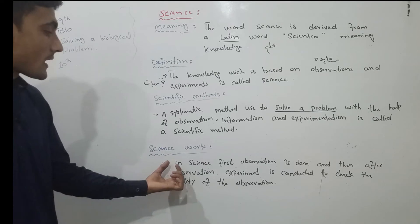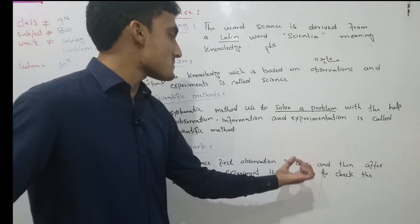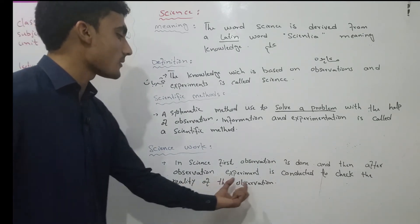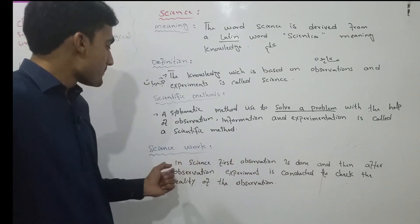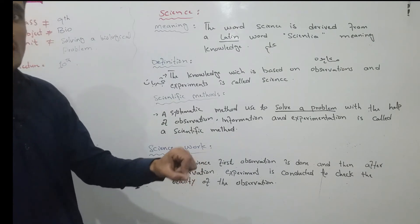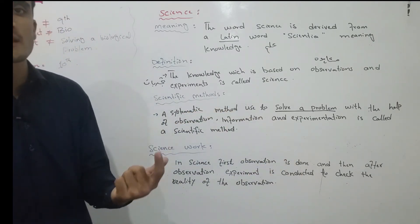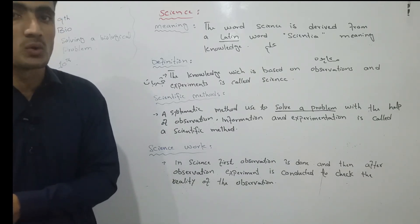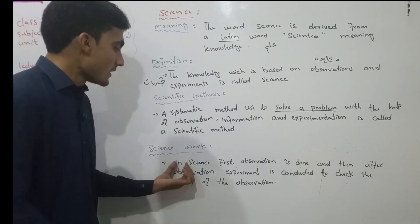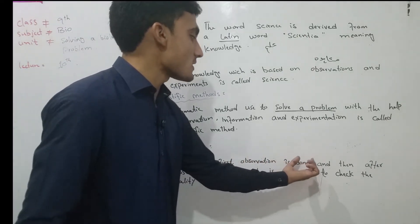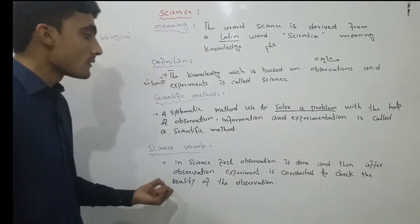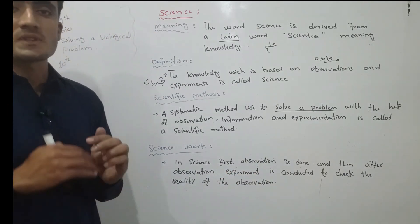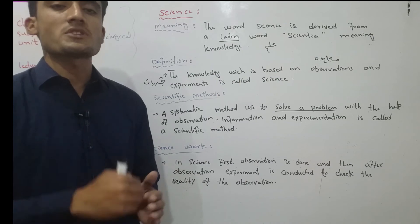In science, first observation is done, and then upon observation, an experiment is conducted to check the reality of the observation. In scientific work, we have to do observations, ask questions, and study step by step. Science: first observation is done, and then after observation, the experiment is conducted.